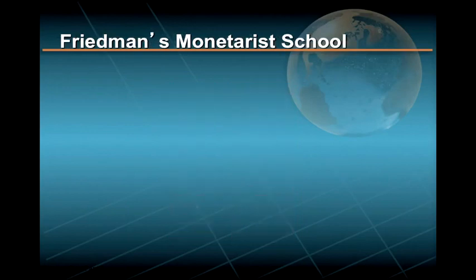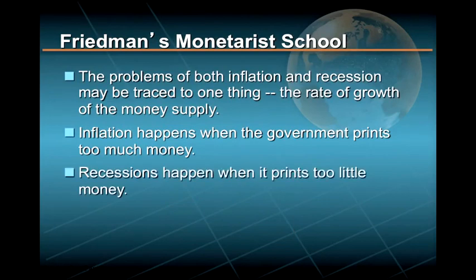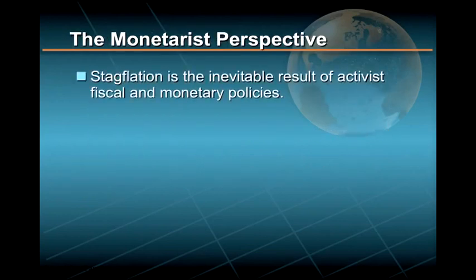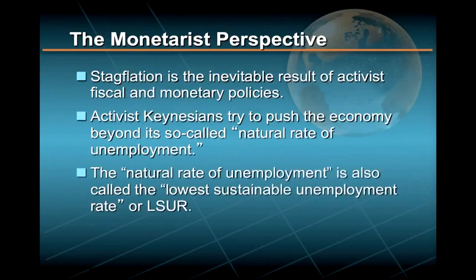Milton Friedman's monetarist school argued that the problems of both inflation and recession may be traced to one thing: the rate of growth of the money supply. To the monetarists, inflation happens when the government prints too much money, and recessions happen when it prints too little. From this monetarist perspective, stagflation is the inevitable result of activist fiscal and monetary policies that try to push the economy beyond its so-called natural rate of unemployment, or lowest sustainable unemployment rate.